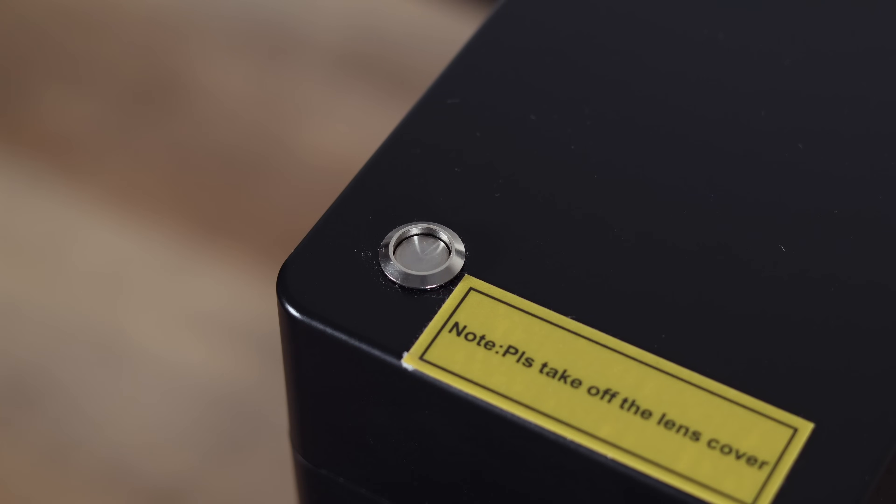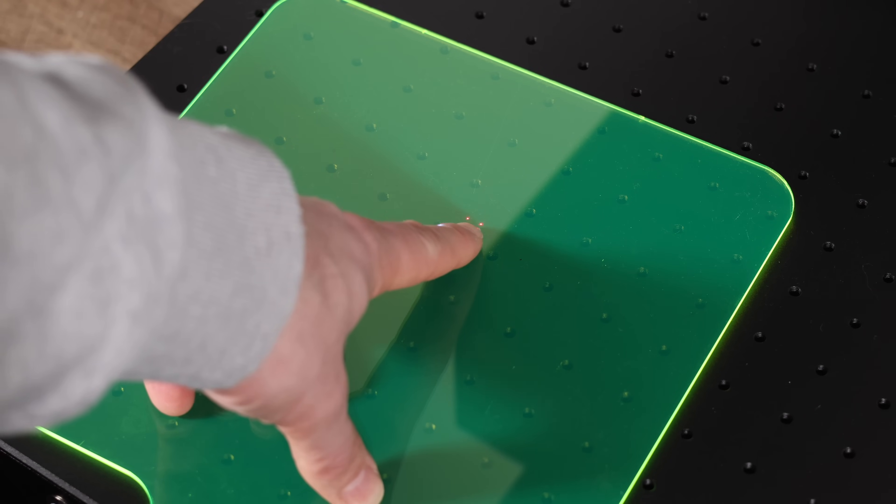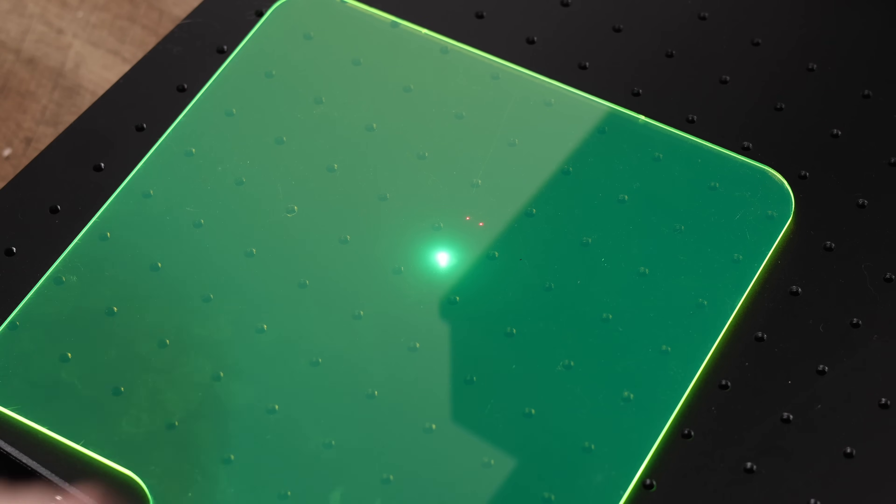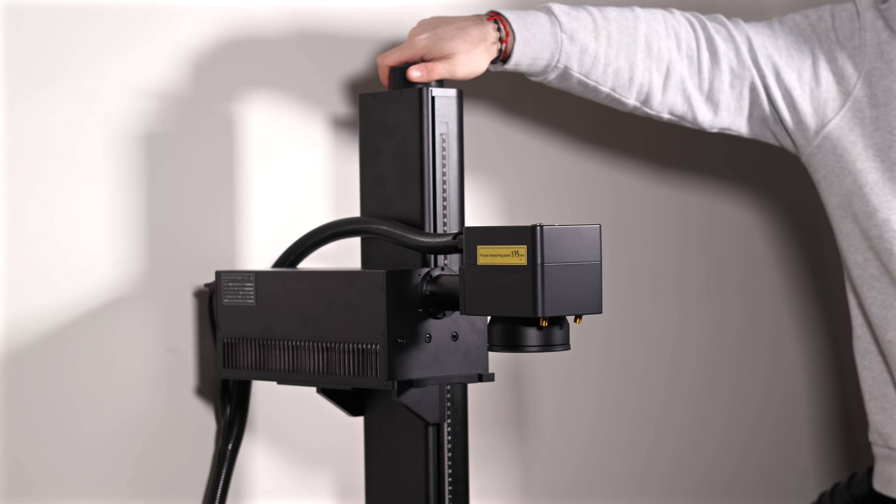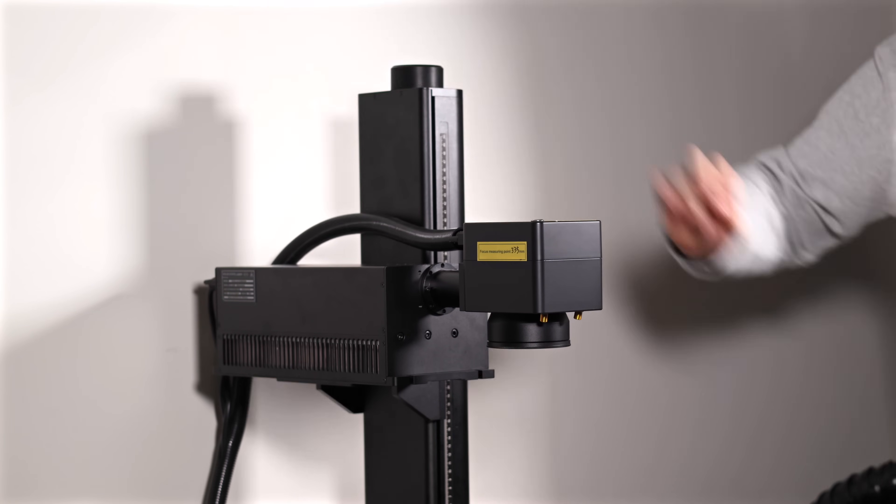On top of the laser head, there's also a button to toggle the focusing lights. These two lights work together, and when they overlap on your material, you'll know the laser is in perfect focus. This feature makes it a lot easier to ensure your engravings are sharp and precise.